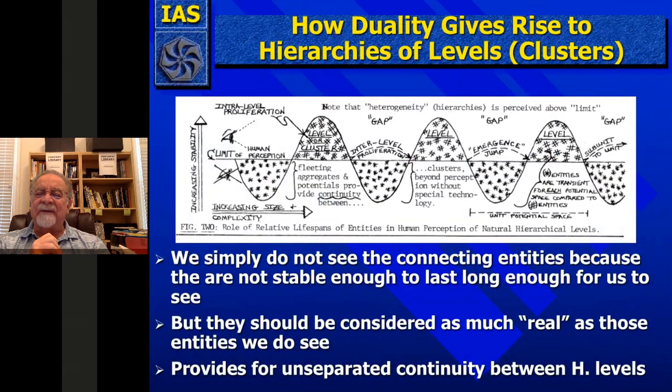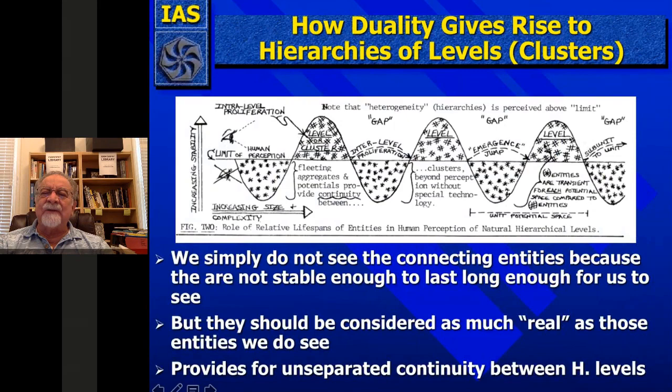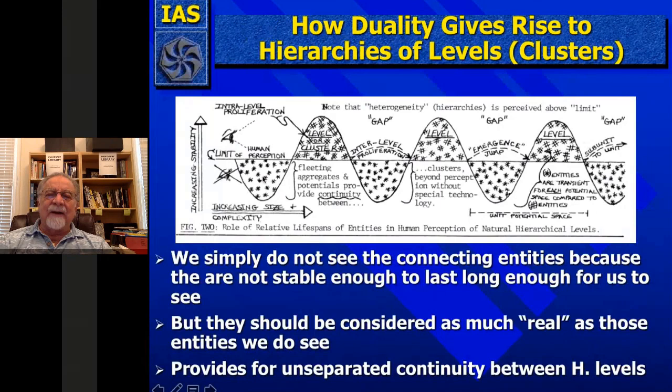We're looking at the gaps, but the gaps should be considered as much real as the entities. It provides for the unseparated continuity between the hierarchical levels. Here is a picture of the unbroken sequence — humans see these levels in nature, but what we don't see are the very unstable inter-sets because those are in the probability space, not in our real space. The emergence jump that we see is across the gap. A hierarchy is: level, gap, level, gap, level. What we don't see are the unstable entities.